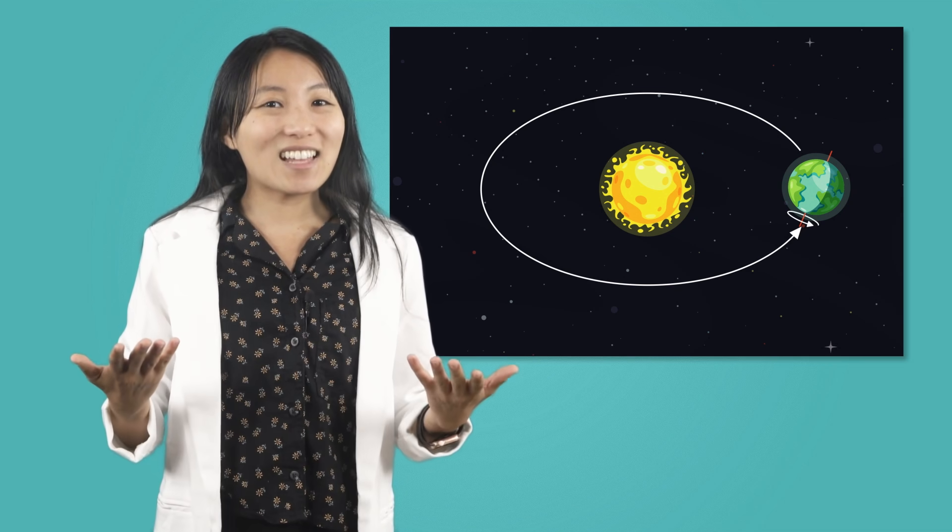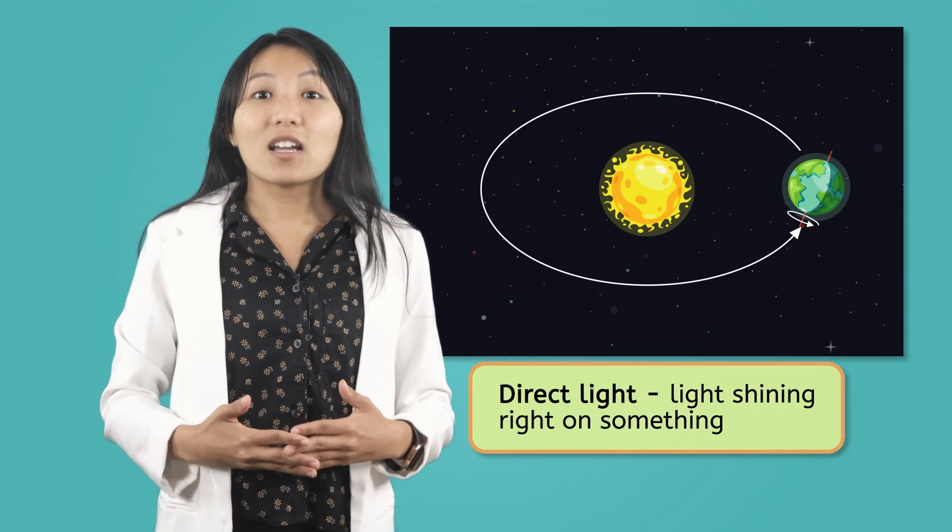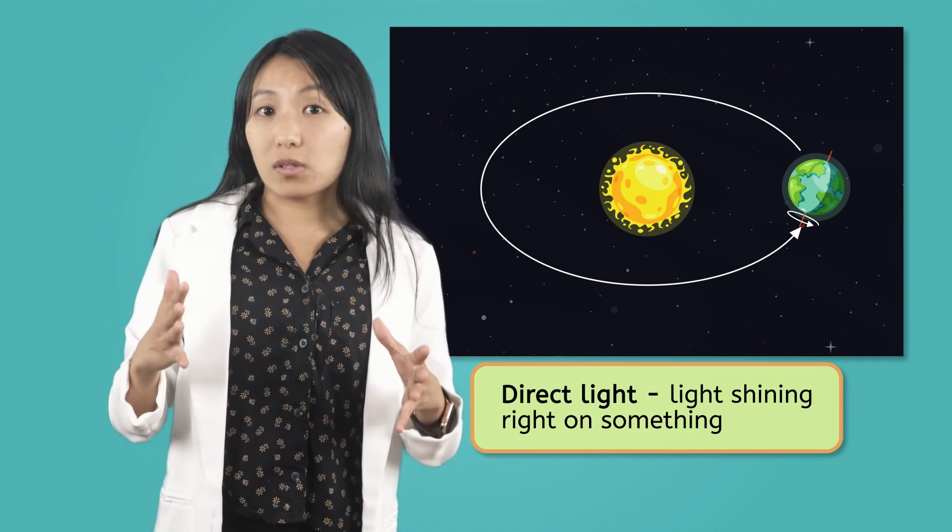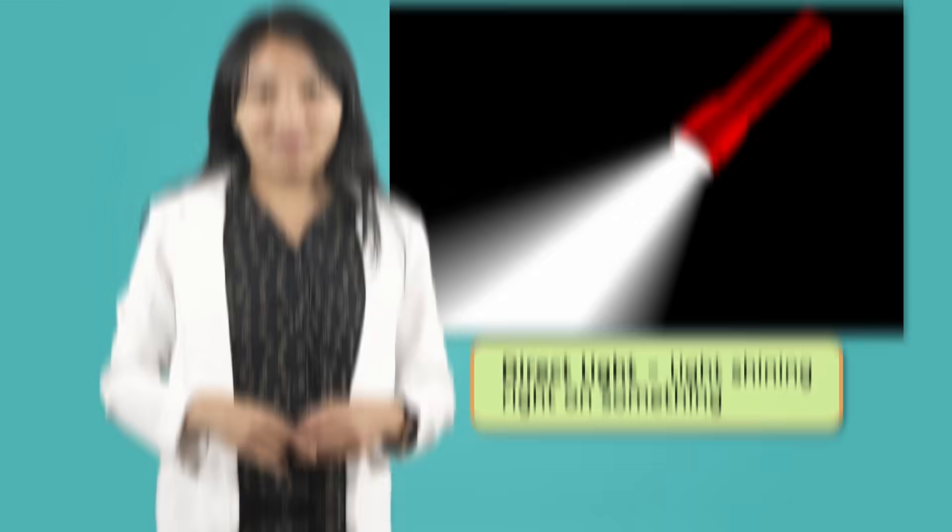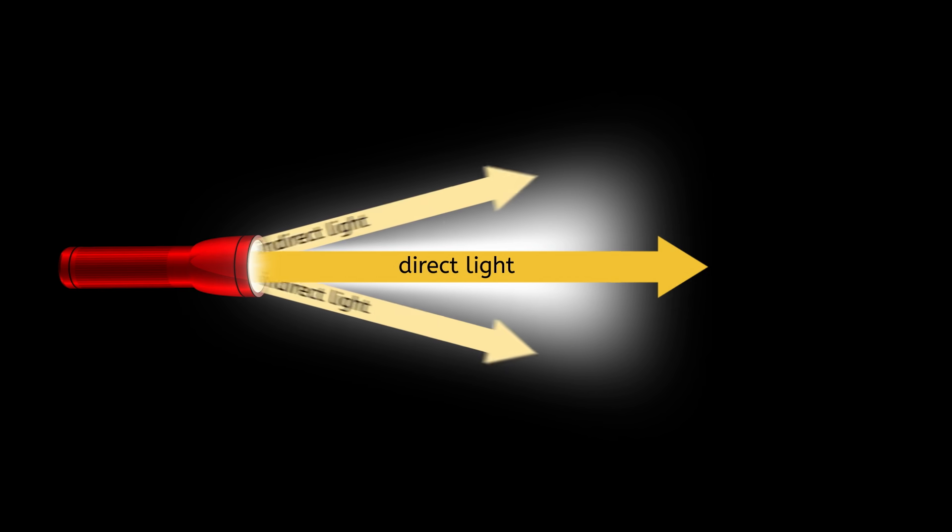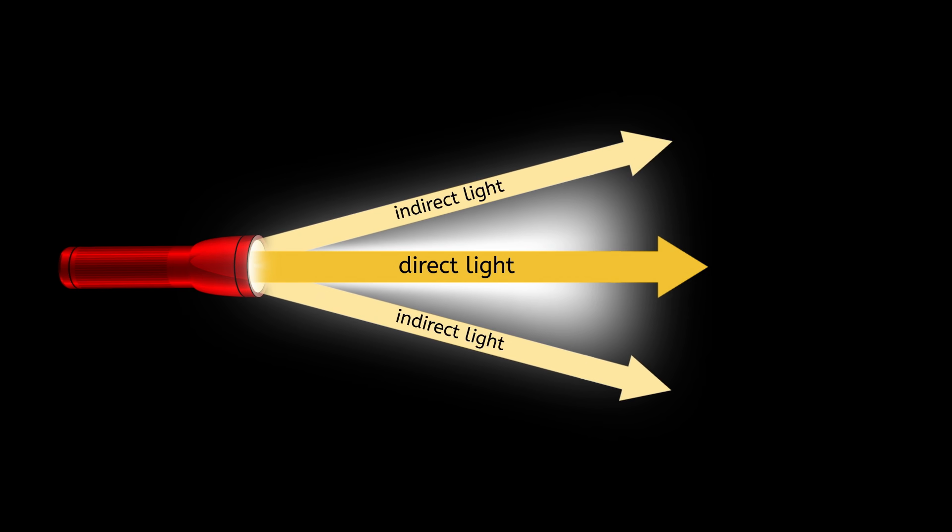What is direct light? Direct light comes from a light source, like this flashlight, that is shining right at something. Let's look closer at this flashlight. The light is shining directly here in the middle. We can see in the middle the light is stronger and brighter. The light is not shining directly on the sides. There is still light there, but it is much weaker and dimmer. This is what we call indirect light.